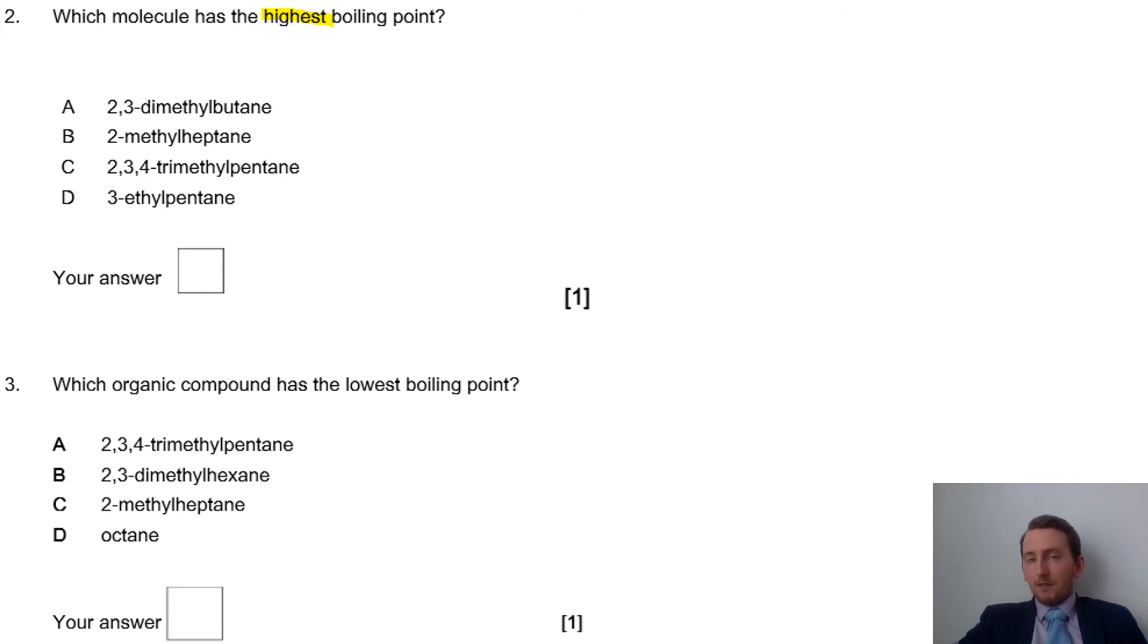For the highest boiling point, it's not going to be particularly branched. Linear is much better than branched. The more branching you have, the worse it is for the boiling point. So we're looking at which one has the least amount of branching.